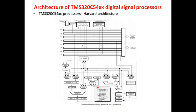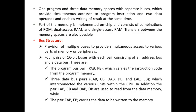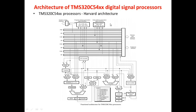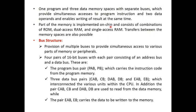Looking into this architecture as a whole, it features one program and three data memory spaces with separate buses, which provide simultaneous access to program instructions and two operands, and enable writing of results at the same time. There are separate program memory and data memory for address generation, along with memory for external and peripheral interfaces. Part of the memory is implemented on-chip and consists of combinations of ROM, RAM, and single access RAM. Transfers between memory spaces are also possible.